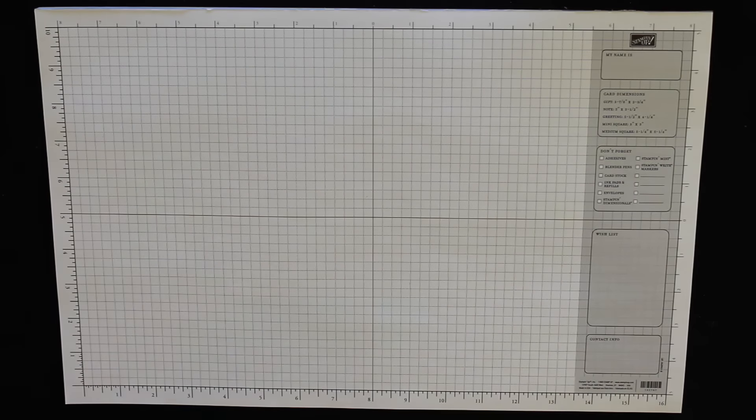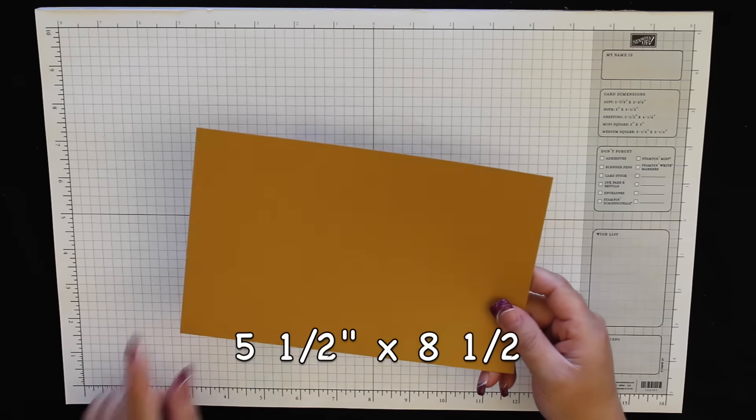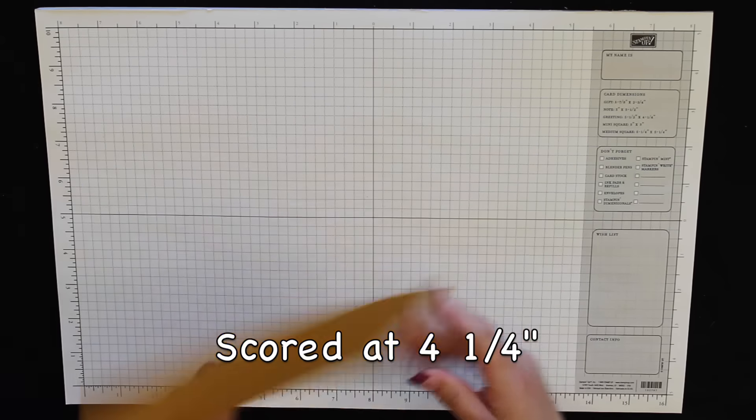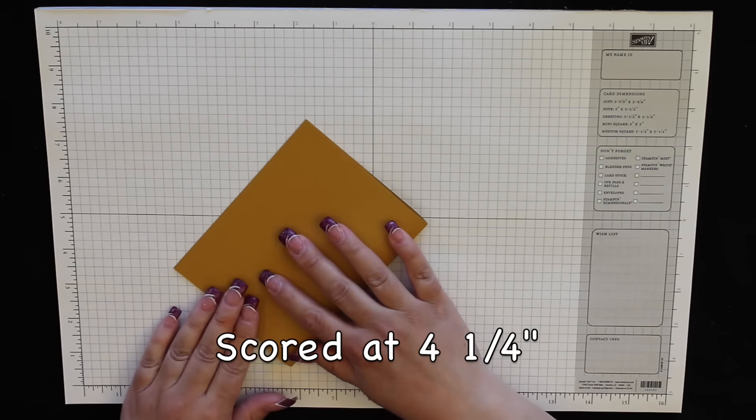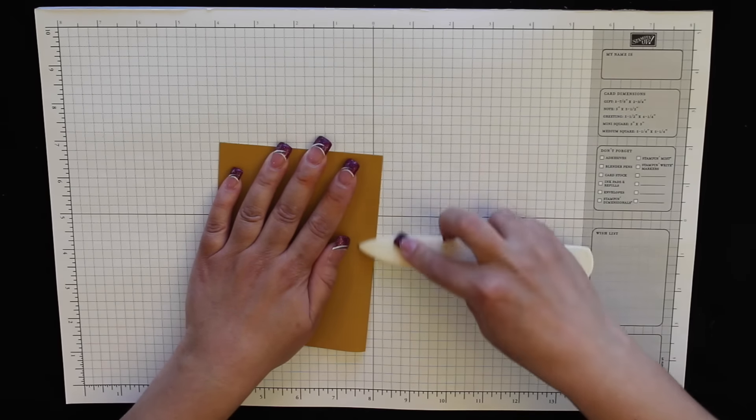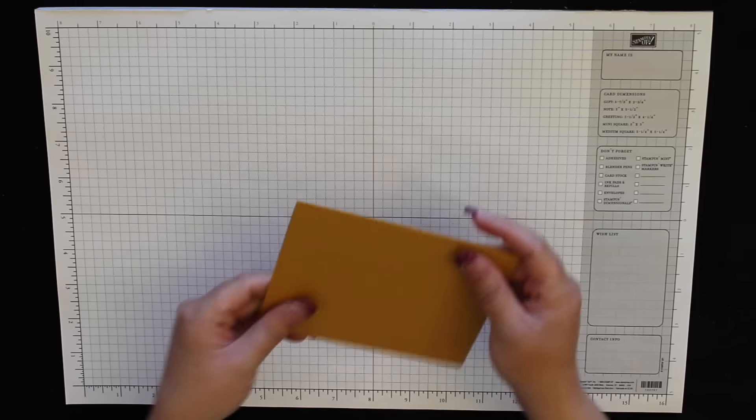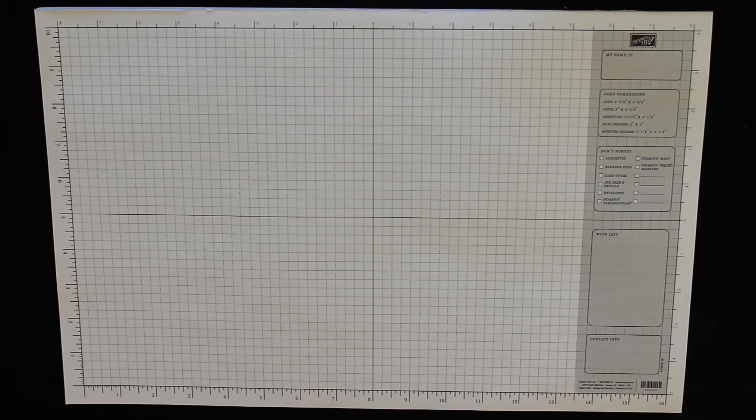Okay, so the base of my card is five and a half by eight and a half, and I have it scored at four and a quarter. This color of cardstock is Delightful Dijon, one of our brand new in colors. Fold it in half and now I'm just going to set it aside because we have lots of stamping and decorating to do.